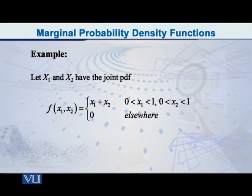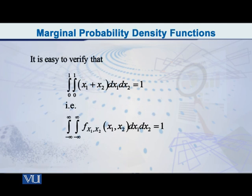Now, let us take a simple example. Suppose that the continuous random variables x1 and x2 have the joint PDF given by small f of x1, x2 is equal to x1 plus x2, and the limits of x1 and x2 are 0 to 1.